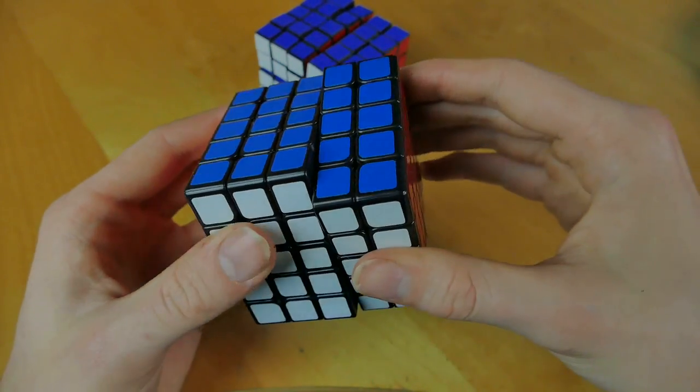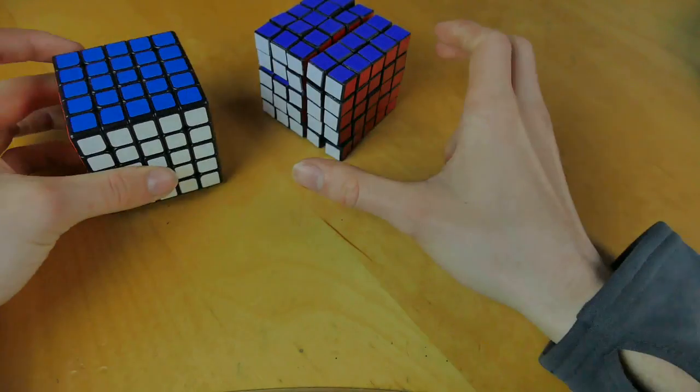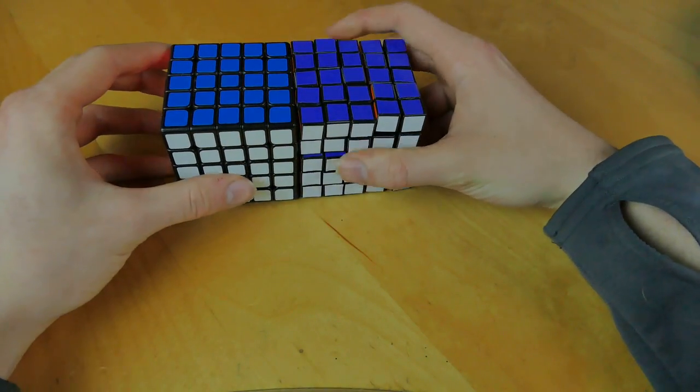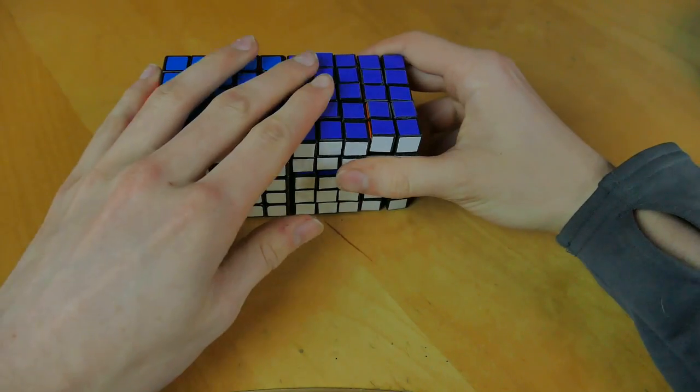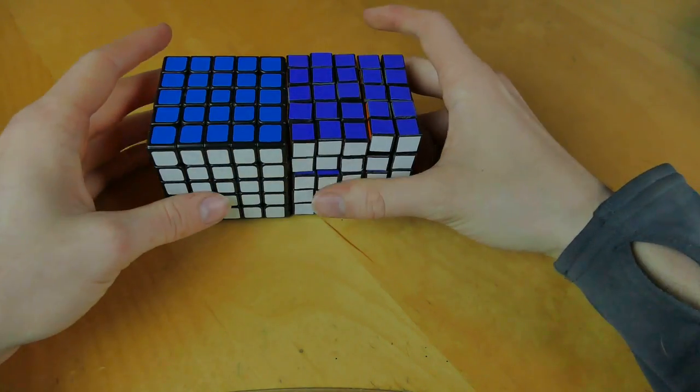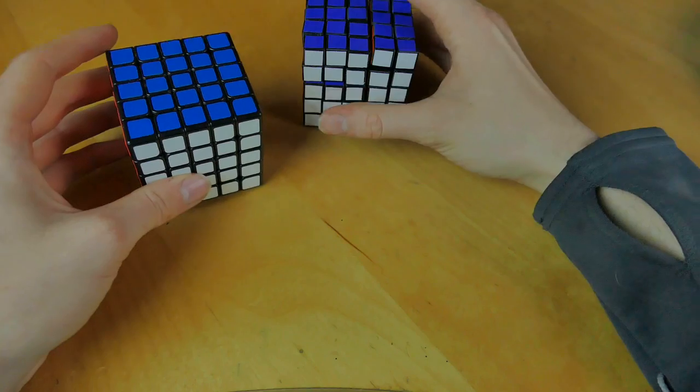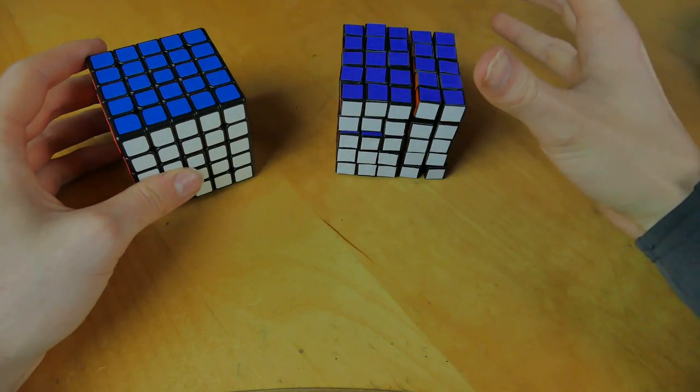As you can see here, these are 5x5 sized cubies - they're the same height. This pseudo 5x5 doesn't turn like a 5x5, but it does have that magical property.